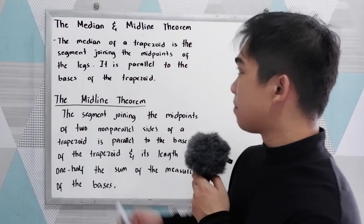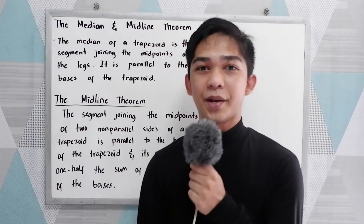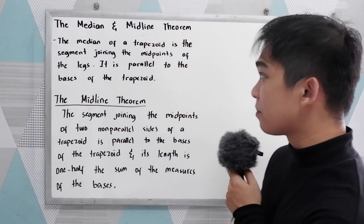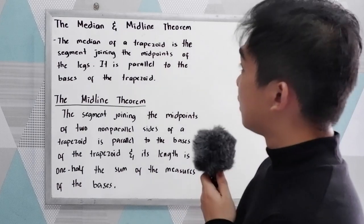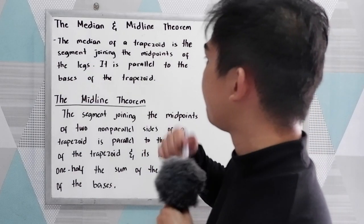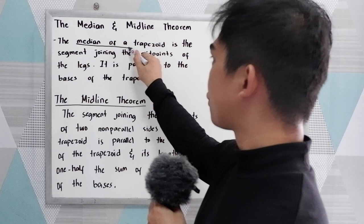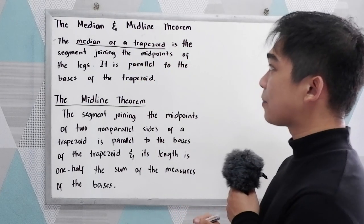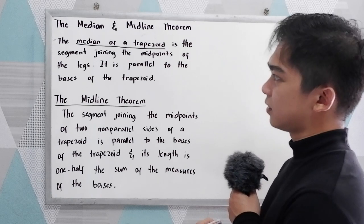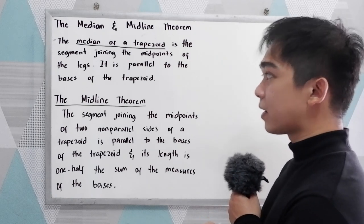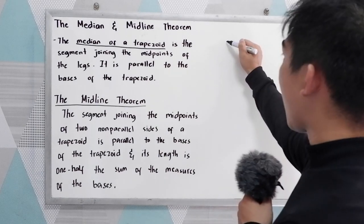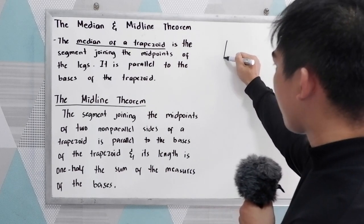Good day everyone. Today I will be discussing the median and the midline theorem. Let us find first what is a median. The median of a trapezoid is the segment joining the midpoints of the legs. It is parallel to the bases of the trapezoid. So let's say we have our trapezoid.